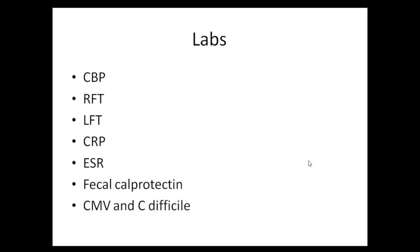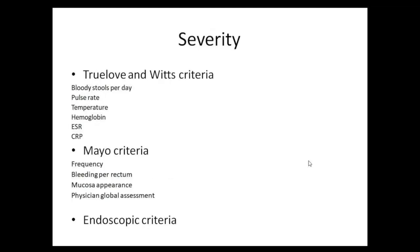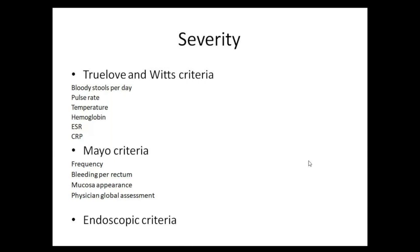CMV biopsy, CMV PCR, and stool for C. difficile toxins must also be sent. Regarding severity assessment, there are three standardized criteria, but the Truelove and Witts criteria is the oldest and easiest — based entirely on clinical examination and easily available lab parameters: bloody stools per day more than six, tachycardia more than 90, temperature elevation, hemoglobin less than 9, raised ESR, and raised CRP — differentiating acute severe colitis into three states.